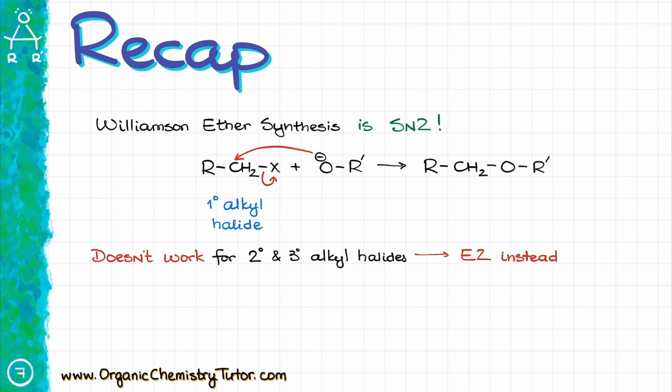So, to recap, remember that the Williamson ether synthesis is an SN2 reaction that works best with primary alkyl halides or methyl halides. If you have a secondary or a tertiary alkyl halide, you're most likely going to end up with the elimination product. Be mindful of the intramolecular reactions, aka cyclization reactions, and count your carbons carefully.